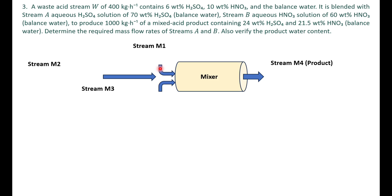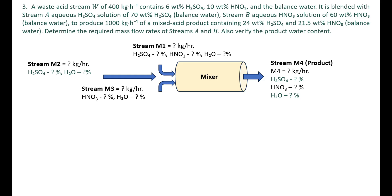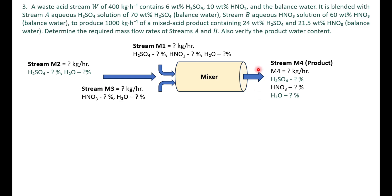The first step is to draw the schematic. There are three streams entering the mixer and one product stream coming out. Stream 1 (m1) is the waste acid stream with 10 weight percent nitric acid and 6 weight percent sulfuric acid, with the balance water. Stream 2 has sulfuric acid and water. Stream B has nitric acid and water — no sulfuric acid. All three mix to form the product stream m4.